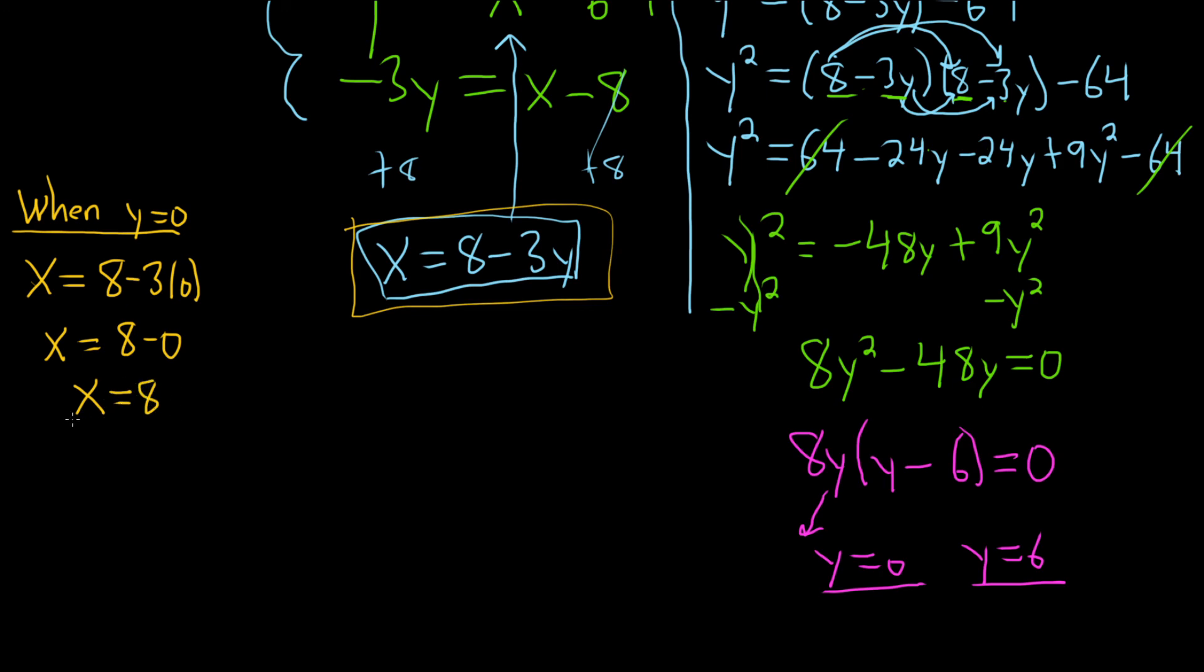So that gives us our first ordered pair. Let's be careful here. x is 8 and y is 0. So really key. So 8 comma 0.